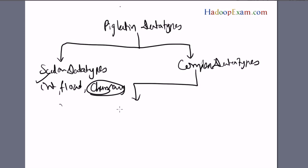The next complex data types are tuple, bag, and map. We'll discuss these data types. Now we are going to discuss relations. Whenever you work on Pig Latin script, it always works on relations.